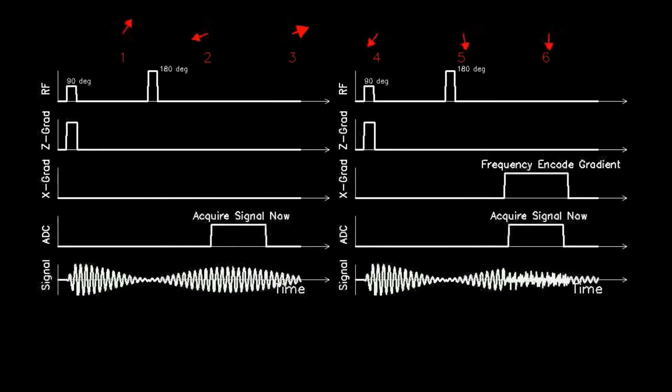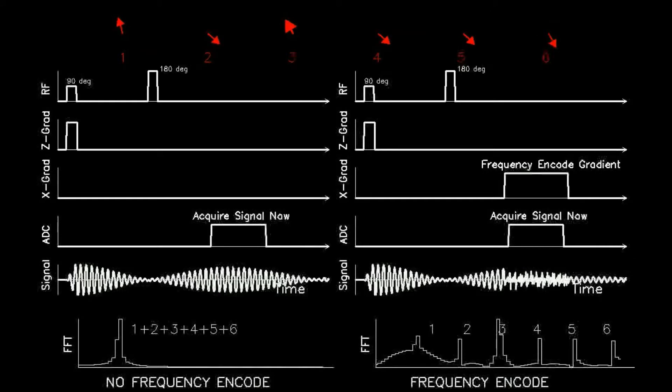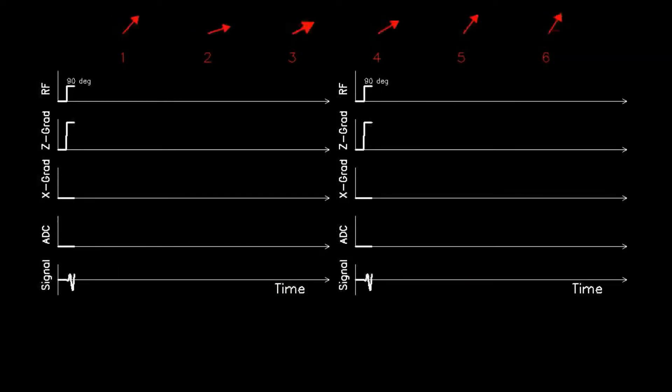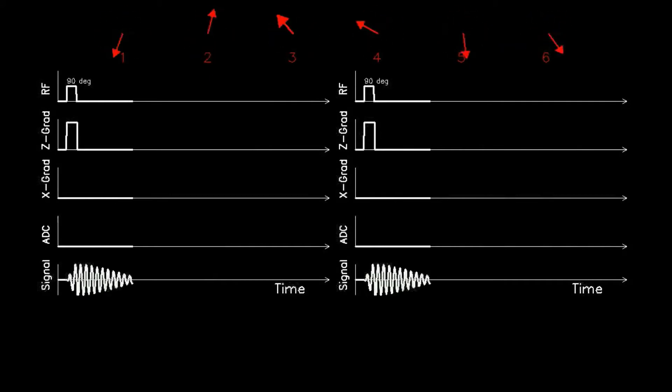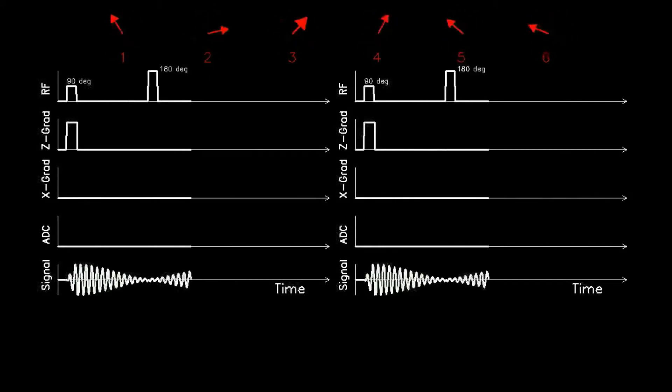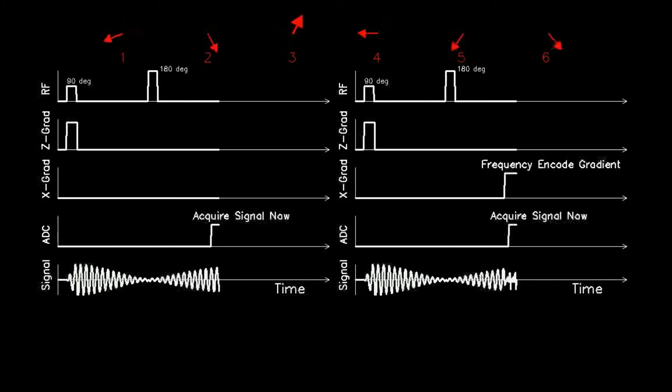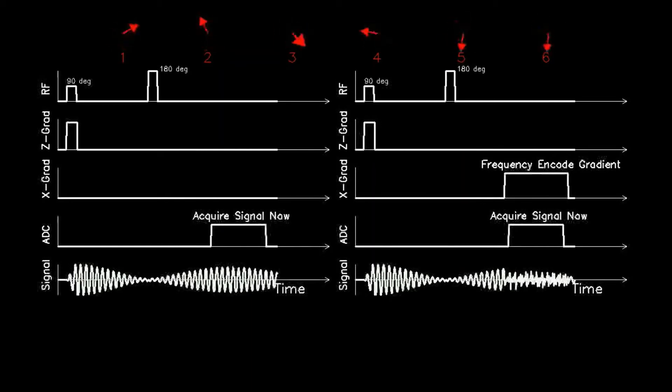The second timeline shows application of the Z gradient required for slice. The third timeline shows the application of the frequency encoding magnetic gradient along the X or horizontal direction. The fourth line shows the time window when signal is required for image formation, and the bottom line shows the entire signal.